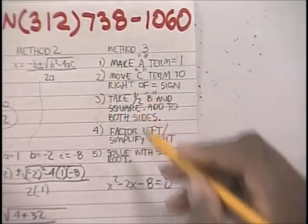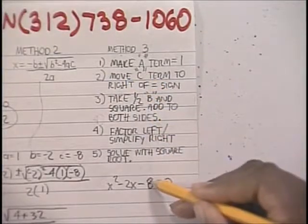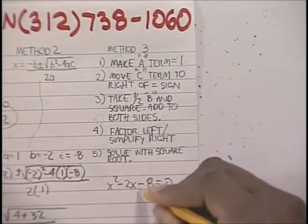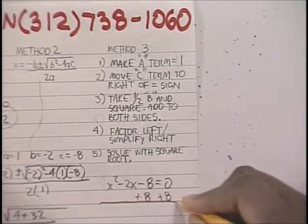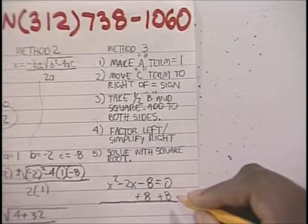The second step is to move this c term over to the right. So we're going to add 8 to both sides. This technique is called completing the square.